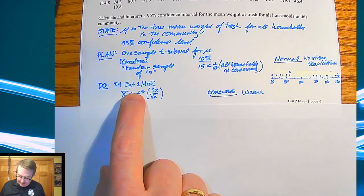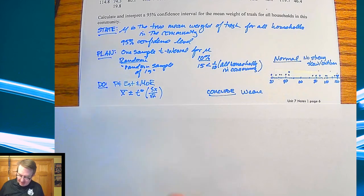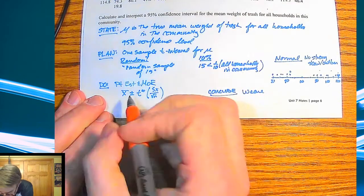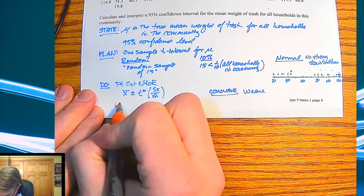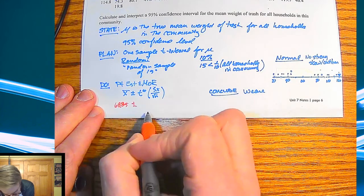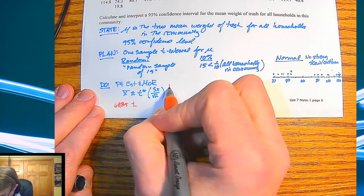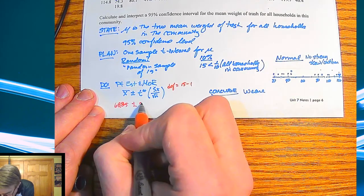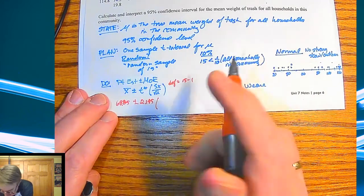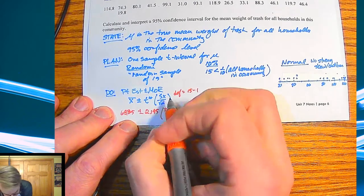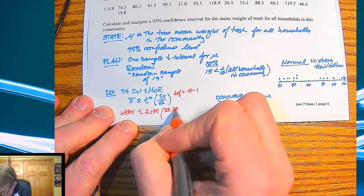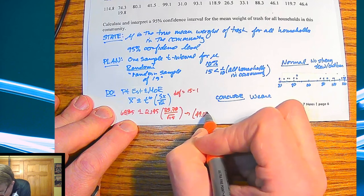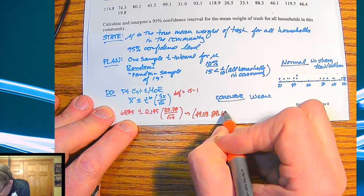So for the do, my point estimate plus margin of error. So I've got x bar plus or minus t star times the rest of that. When you do all of this, we're going to end up with a mean of 68.85 pounds plus or minus. Now our t star for this, remember degrees of freedom here is going to equal 14, so you've got 15 minus one. So you're going to end up with 2.145 times standard deviation, which should be right around 35.78 divided by the square root of 15. And that is going to give you a confidence interval running from 49.03 to 88.66.